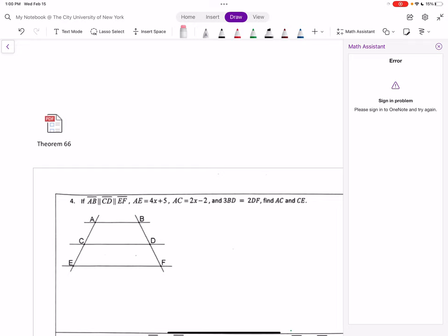Hello students. So for this number 4, we see that line AB is parallel to CD, so this guy parallel to CD and parallel to EF. And we can see the transversal AE and BF over there.